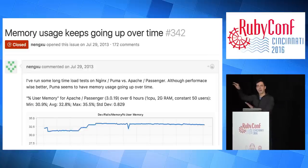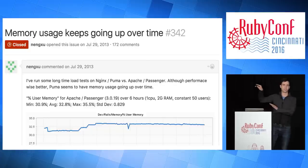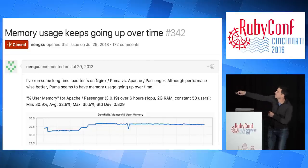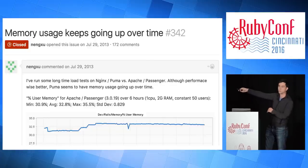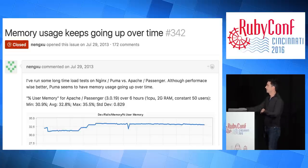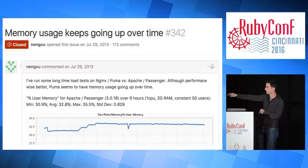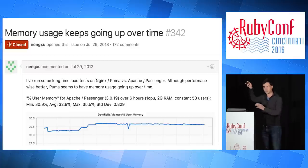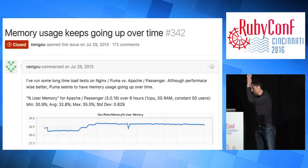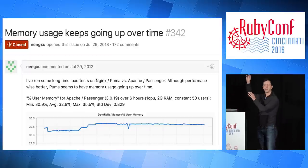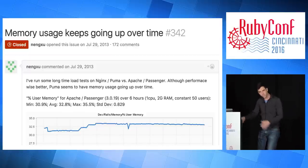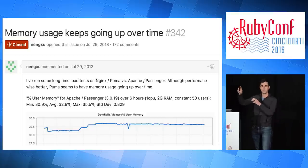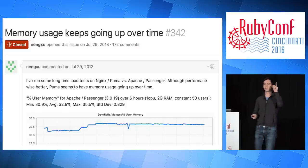This is Puma's top issue ever in terms of comments — 172 comments about memory usage going up over time. I want you to remember the shape of this graph because it's very interesting. This thread is dozens of people talking about how they switched to Puma and now have a memory leak, or switched to Puma and now their processes are using four gigabytes of memory, and Unicorn didn't do that — so there must be a problem with Puma.